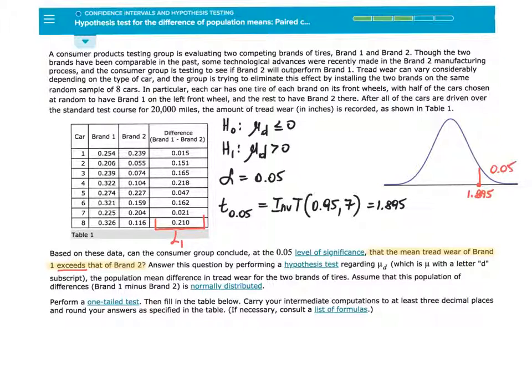Based on these data, can the consumer group conclude, at the 0.05 level of significance, that the mean tread wear of Brand 1 exceeds that of Brand 2? Answer this question by performing a hypothesis test regarding mu sub d, which is mu with a letter d subscript, the population mean difference in tread wear for two brands of tire.